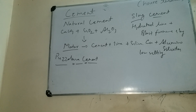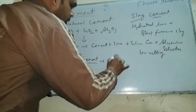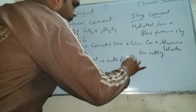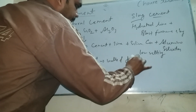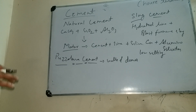Slag cement is a very old cement. It is used as concrete for the construction of walls and domes.